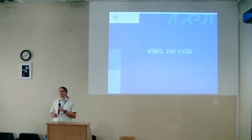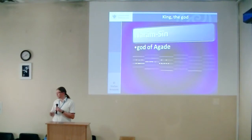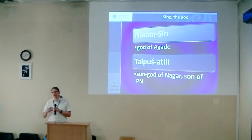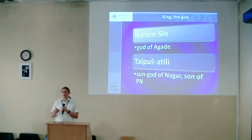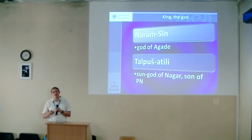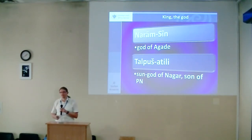Finally, we have kings who are themselves gods — only two cases. First is Naram-Sin, who was god of Agade. He had no relatives at all: no father, mother, brother, nephew, nobody. He simply is the god of Agade. Second is Tawush-Atili, who is son-god of Nagar, yet simultaneously son of a terrestrial father — being a son-god while also having an earthly parent.